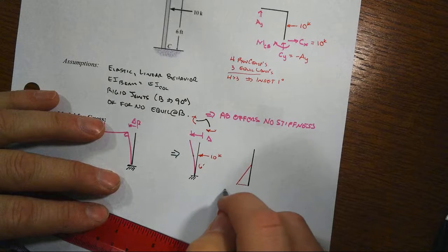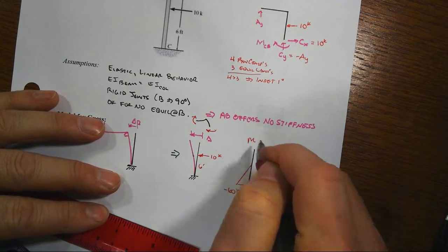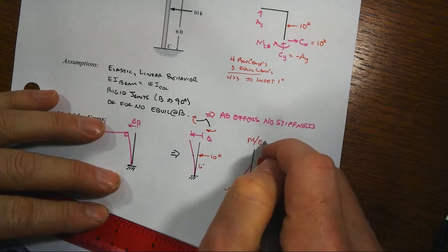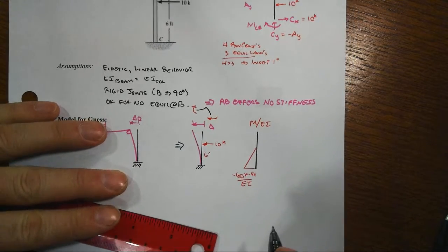We've got six foot high, that would be minus 60 kip foot. That would be our moment diagram. We would divide by EI to get the curvature.